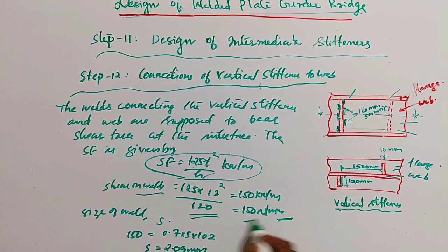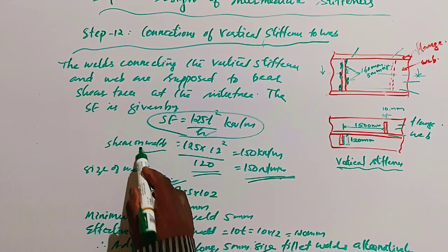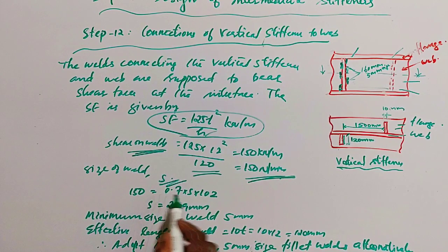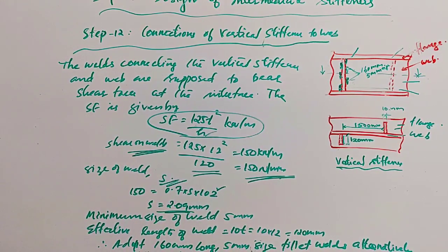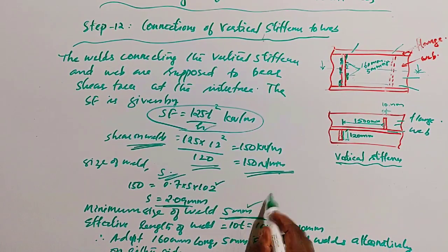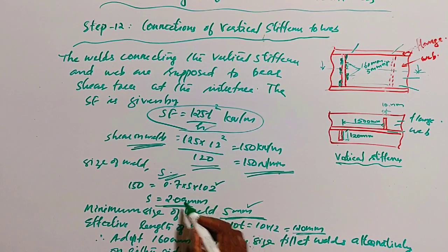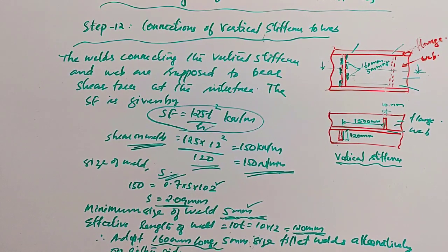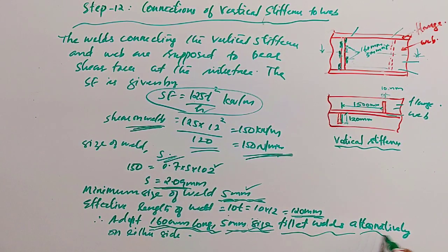The shear on weld = 125 × 12² / 120 = 150 N/mm (per meter). Equating this to the weld strength: 150 = 0.7s × 102, giving s = 2.09 mm. However, the minimum weld size is 5 mm, so use 5 mm. The effective length of the weld is 10t = 120 mm. Therefore adopt a 160 mm long, 5 mm size fillet weld, placed alternatively on either side.